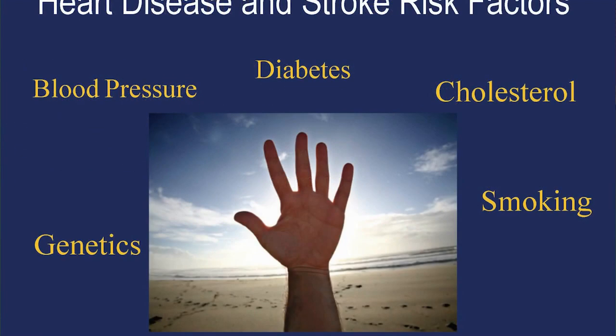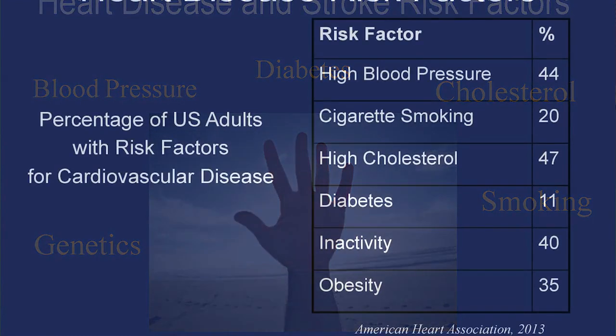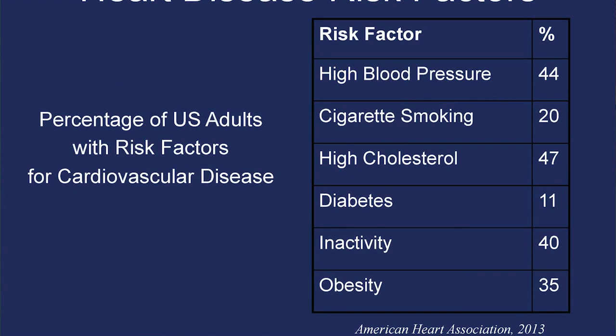Stroke also carries a heavy financial burden, costing the United States 36 billion dollars each year. Cardiovascular disease — heart disease and stroke — have five major risk factors: family genetics, high blood pressure, diabetes, high cholesterol, and smoking. A significant percentage of people in the United States have several of these risk factors.